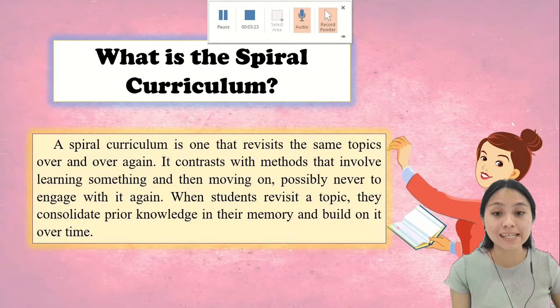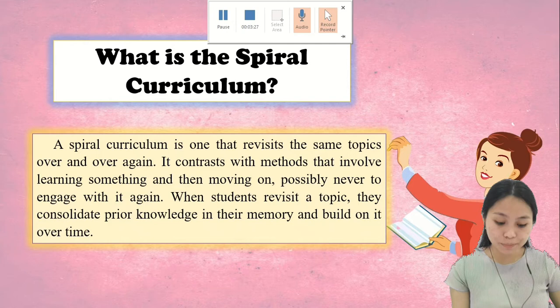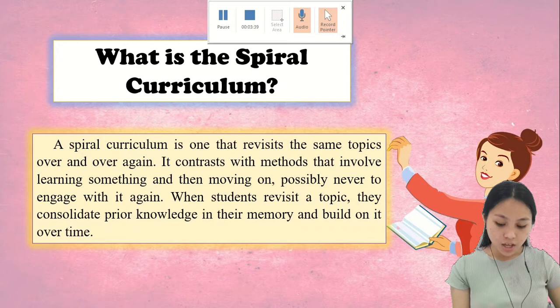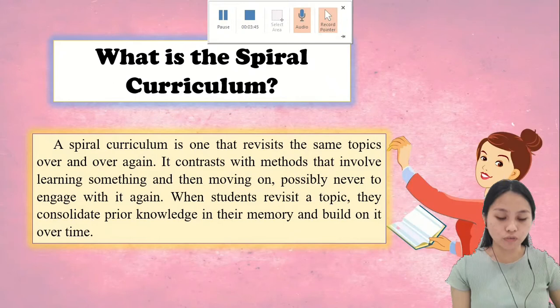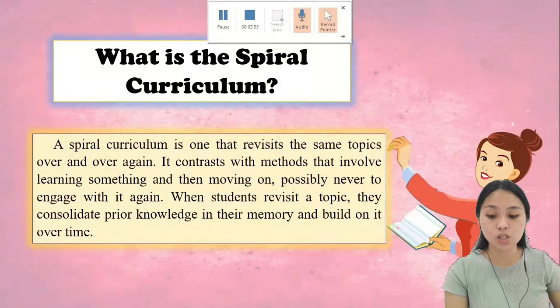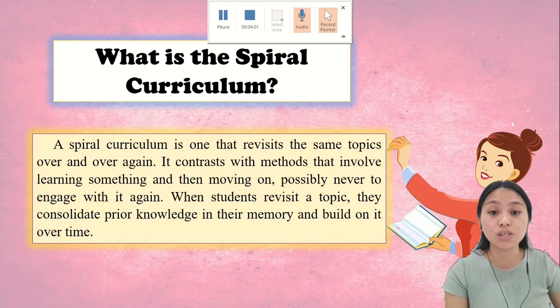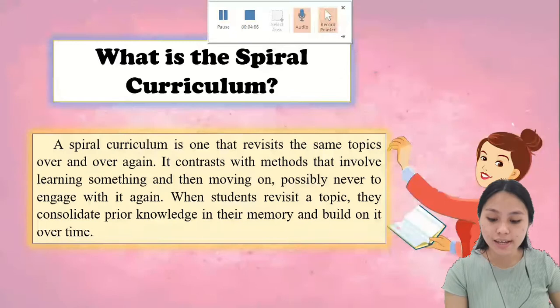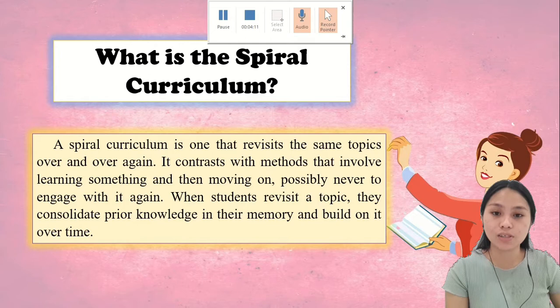What is spiral curriculum? A spiral curriculum is one that revisits the same topics over and over again. It contrasts with methods that involve learning something and then moving on, possibly never to engage with it again. When students revisit a topic, they consolidate prior knowledge in their memory and build on it over time. Bruner stressed that teaching should always lead to boosting cognitive development.